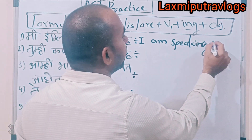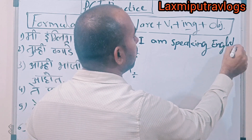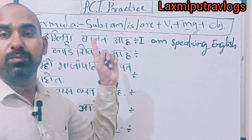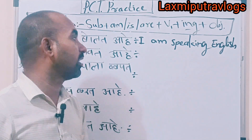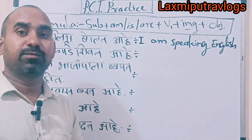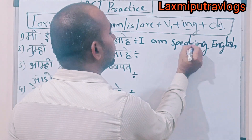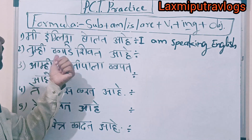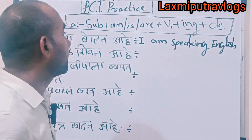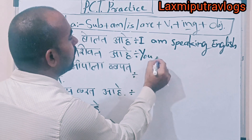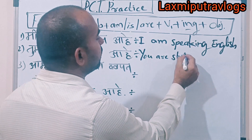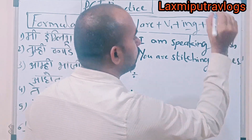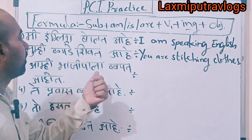For example: 'I am speaking English.' Here, 'I' is the subject, 'am' is the helping verb, 'speaking' is V1 in continuous form, and 'English' is the object. Next example: 'You are stitching clothes.' — stitching, S-T-I-T-C-H-I-N-G.